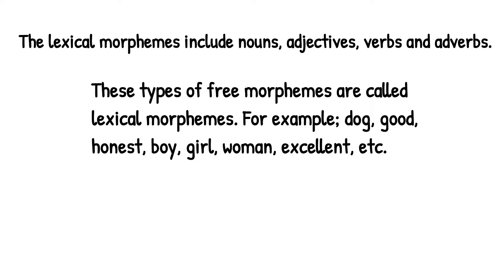Nouns, adjectives, verbs, and adverbs are the four categories which are called lexical morphemes. For example, dog as a noun, good as an adjective, honest as an adjective, boy, girl, woman, excellent, and so on. These are words whose meaning is independent and no bound morpheme has been added.